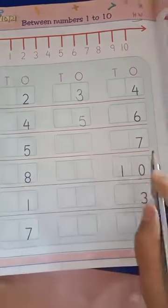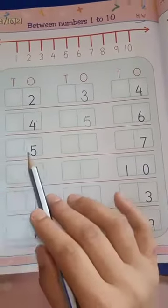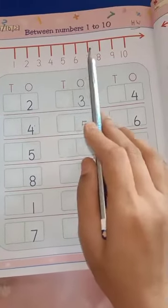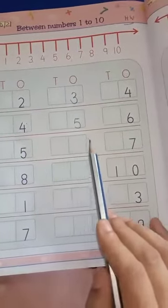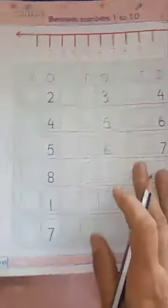Now which number is this? Number 5. And which number is this? Number 7. So what comes in between? Let's start the counting: 1, 2, 3, 4, 5, 6, 7. So write down here 6.